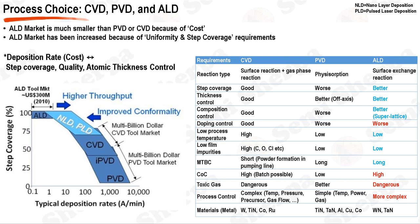Yet, the implementation of ALD does come with its challenges. The process demands a higher consumption of precursor materials, leading to a higher cost of consumables, COC. This is because ALD requires excess precursor to ensure complete surface coverage, and the unabsorbed precursor must then be purged, leading to waste. Furthermore, the precursors used in ALD processes can often be dangerous and toxic, necessitating stringent safety measures. Moreover, ALD processes are more complex to control than their CVD and PVD counterparts, requiring a deep understanding of process parameters and a high degree of control.